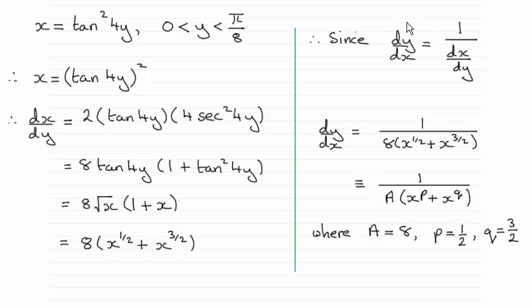Then we pick up on this rule, that dy dx is the reciprocal of dx dy. And it leads into this result here, and I can say that it's identical to the form that we're asked to show.